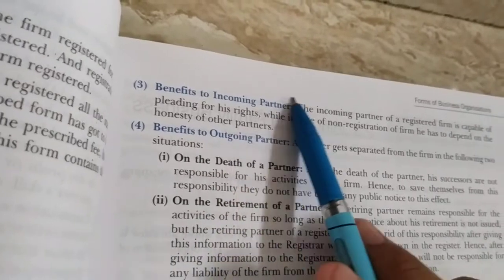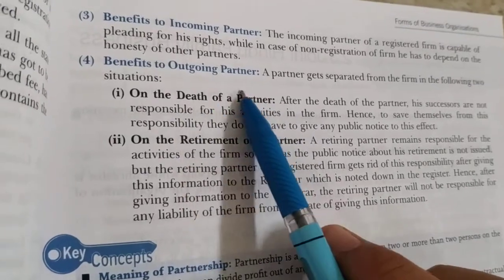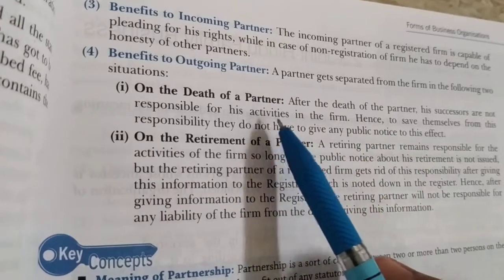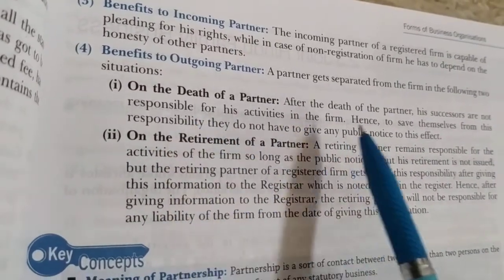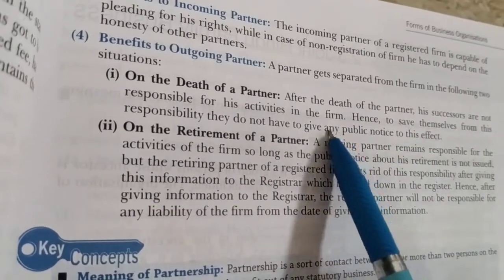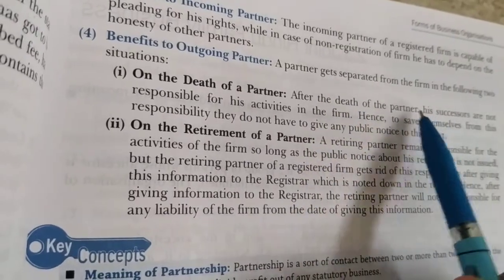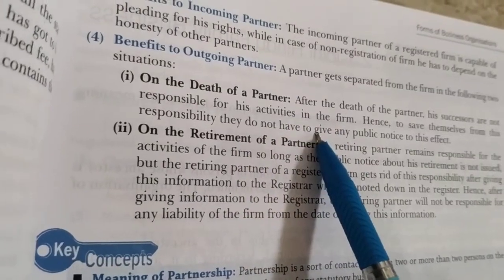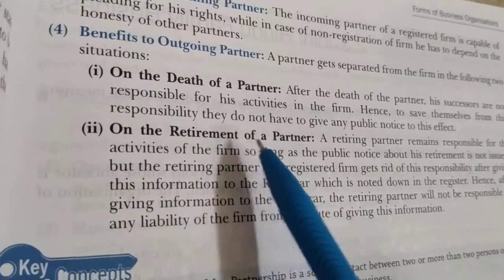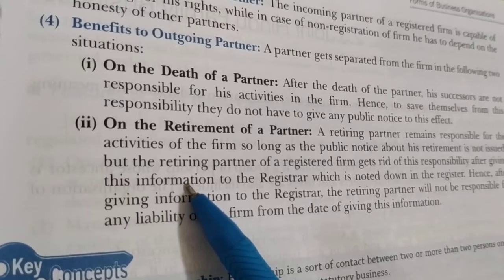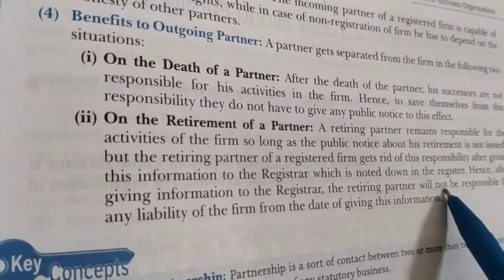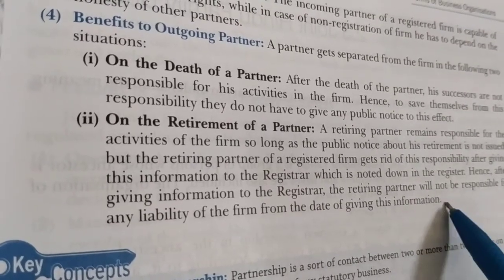अगर firm registered है, तो जो partner firm छोड़ के जा रहे हैं उनको भी advantage है. तीन partner थे, किसी की death होती है, तो death के तुरंत बाद उसके nominee, उत्तराधिकारी को firm की activity के लिए कोई भी responsible नहीं होता. Firm registered है तो automatically उसका successor responsible नहीं होगा और उसे कोई public notice नहीं देना पड़ेगा — automatically वो firm से out हो जाएगा. ऐसे ही कोई partner retirement ले रहा है, तो उसे भी public notice देने की जरूरत नहीं — केवल Registrar को information दे दें कि मैंने ये partnership छोड़ दी है. उसके बाद वो firm के बाकी के time के काम के लिए कोई भी responsible नहीं होता.